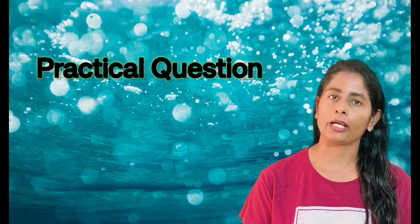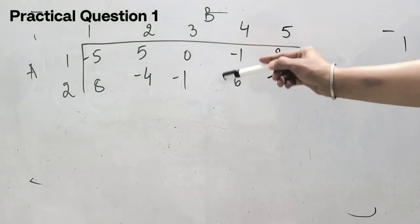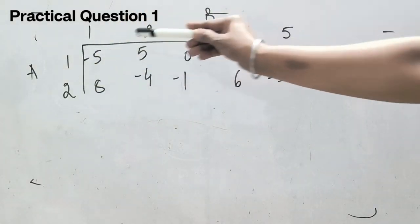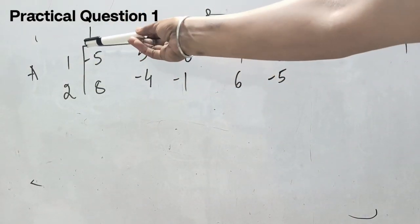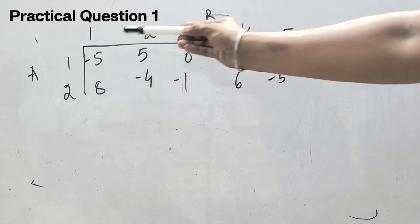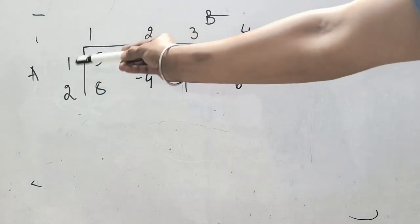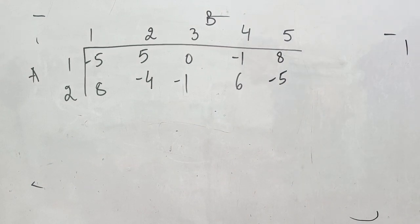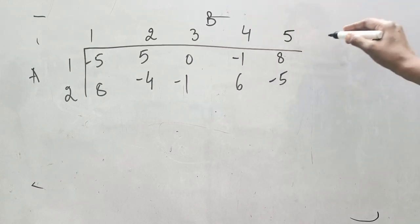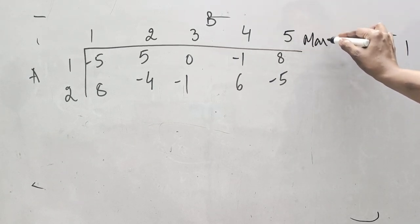Let us learn the graphic method with a practical question. In this question, player A has two strategies and player B has many strategies. Since one of the two players has two strategies, we can apply the graphic method. Before applying it, we must check whether maximin equals minimax — i.e., whether a saddle point exists.